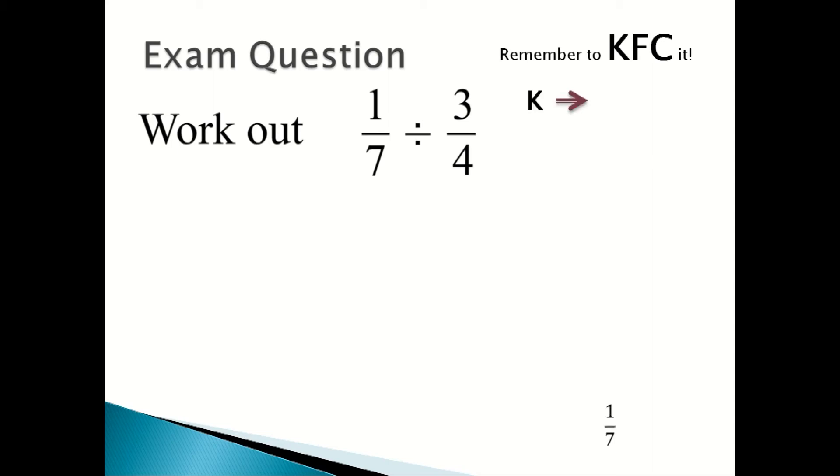You keep the first fraction the same, so it's 1/7. You flip the second fraction to become 4/3, and you change the second fraction to become a multiplication sign. So now the question changes to this: 1/7 times by 4/3.